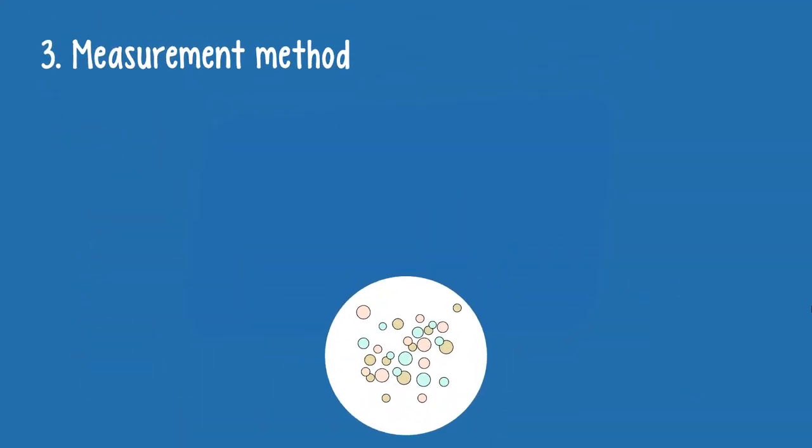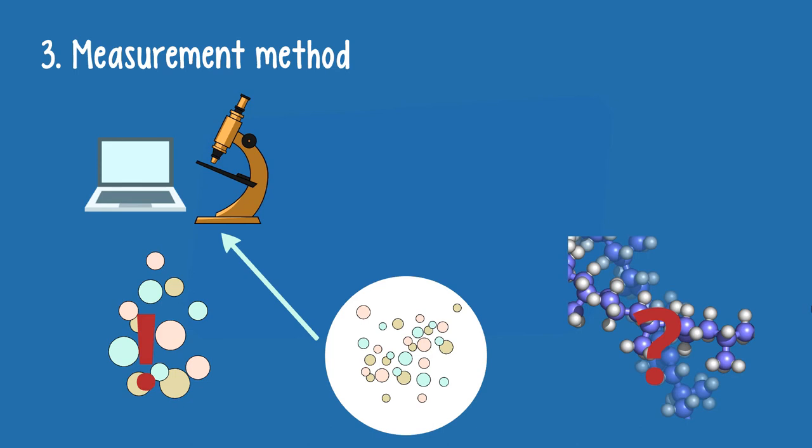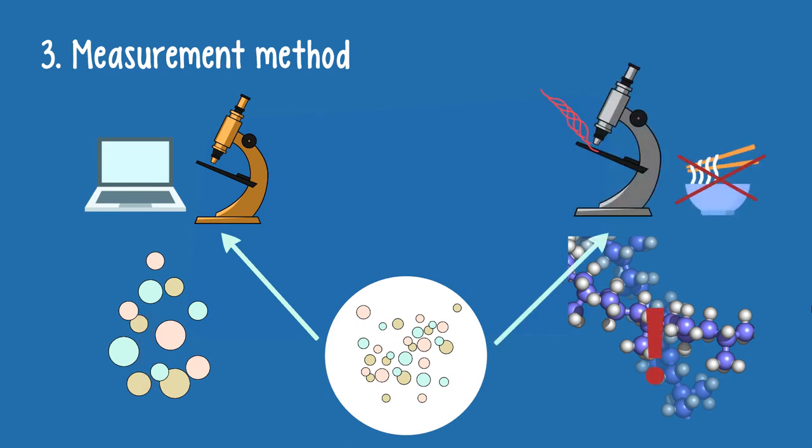Third, the measurement method in itself has an impact on your results. Some methods simply rely on counting particles using a microscope and a computer software. They are good at determining the number, size, and shape of particles, but cannot tell you what those particles are made of. Are they really plastic particles? If so, which kind of plastic? Others are excellent at answering those questions, like Raman microspectroscopy. Unfortunately, they don't tell you which size and shape a particle is. This is one of many reasons why scientists need to be careful when comparing results from different studies.